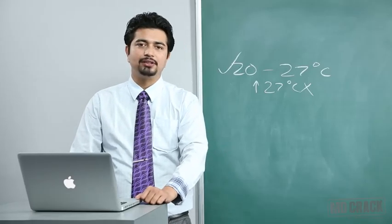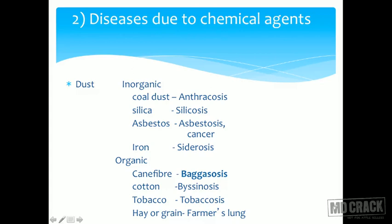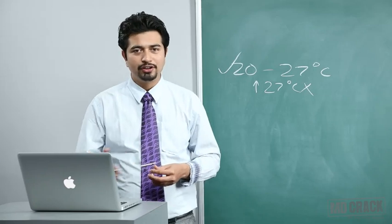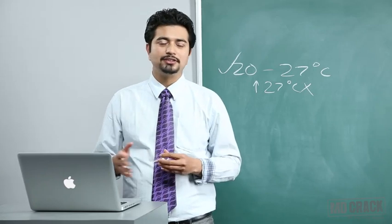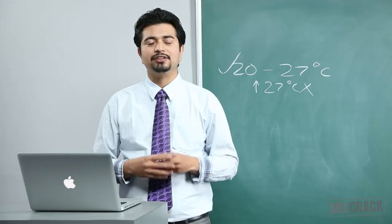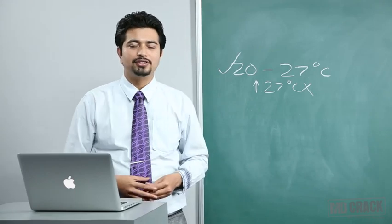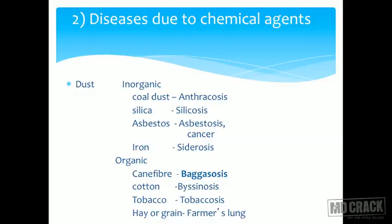Moving to diseases due to chemical agents — there are many chemicals causing many diseases. Mostly chemicals cause skin cancer and dermatitis. Dust is also an important category under chemical agents. What we are going to focus on is diseases caused by dust. Pneumoconiosis is the key topic here.